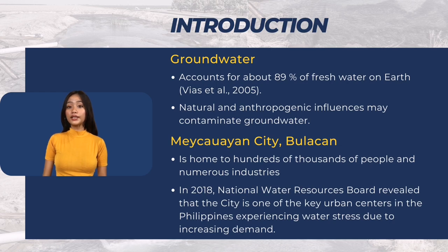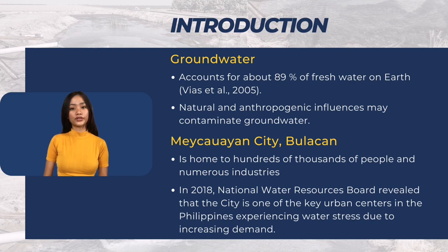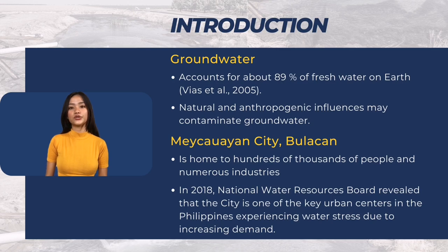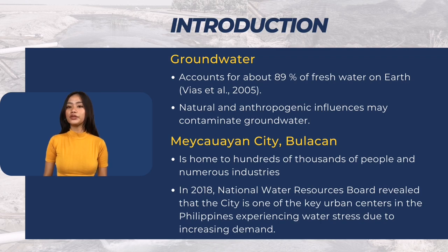The study focuses on groundwater which accounts for 89% of fresh water on earth, making it one of the most important natural resources as it is where we get the water we drink and use in irrigations from. However, it is very prone to contamination, both nature and human-induced.